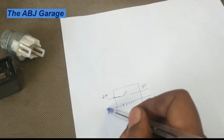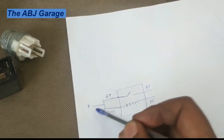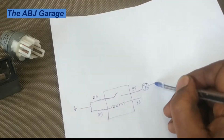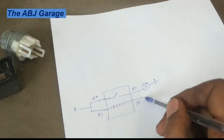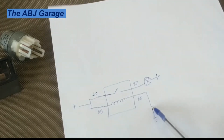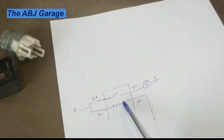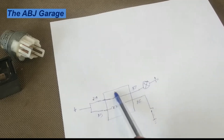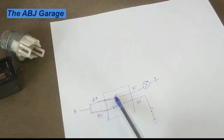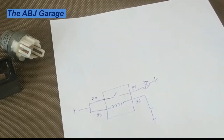When we want to connect, terminal 30 is connected to battery positive. Terminal 87 is connected to our load — for example, a lamp. Terminal 85 is connected to a control switch, and then the switch is grounded. So when this switch is turned on, current will flow from battery positive through the coil and then to ground. This will magnetize the coil and the magnetism will close the contact point. When this contact point is closed, current can now flow from battery positive through the load circuit. This is schematically how they are represented.